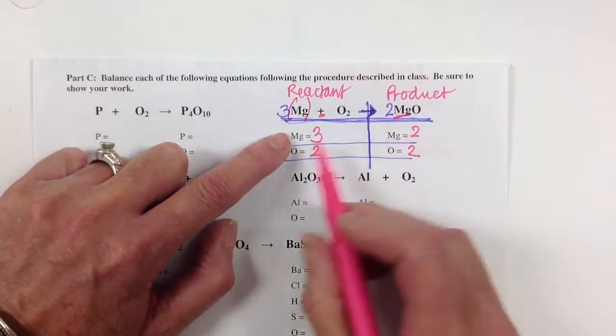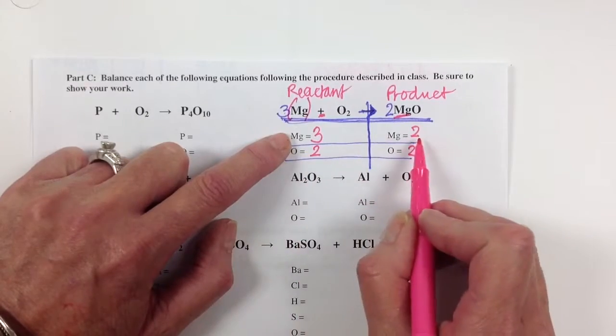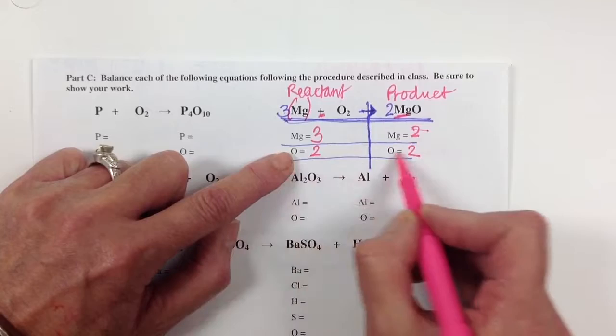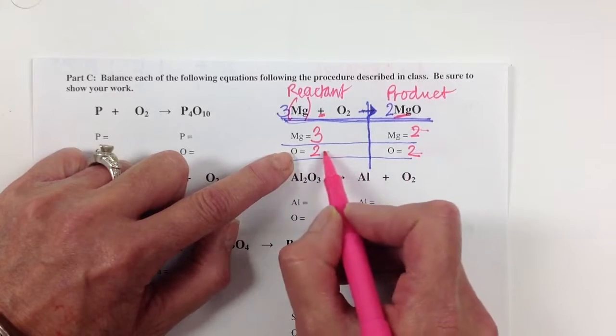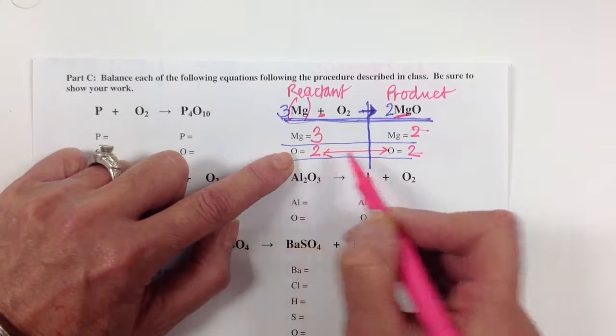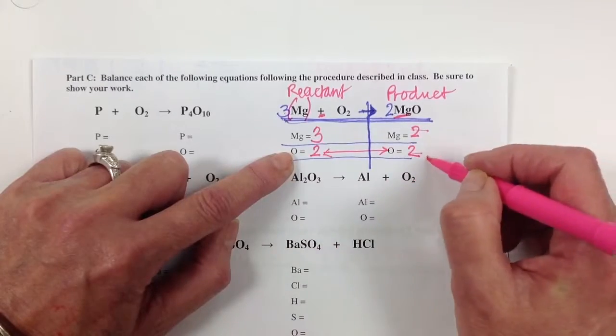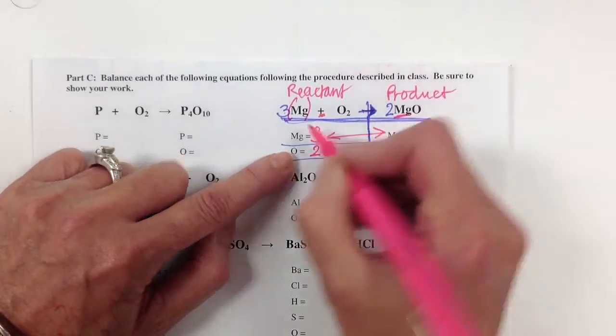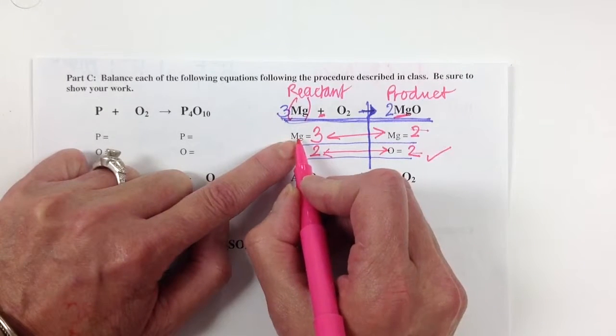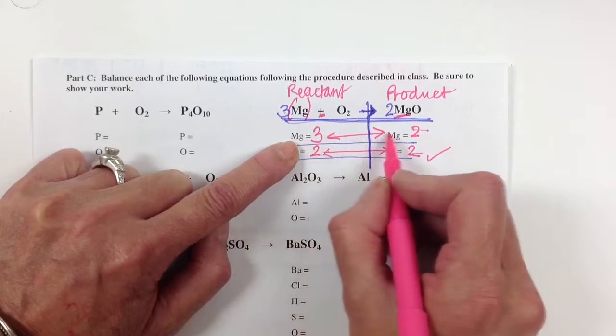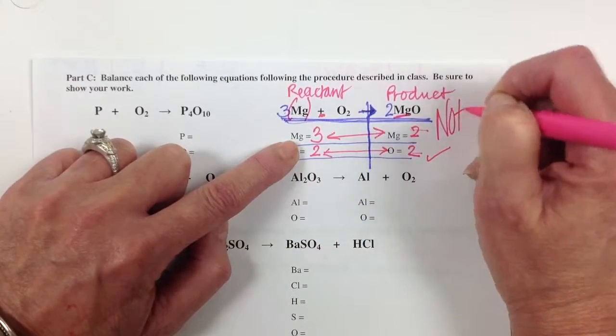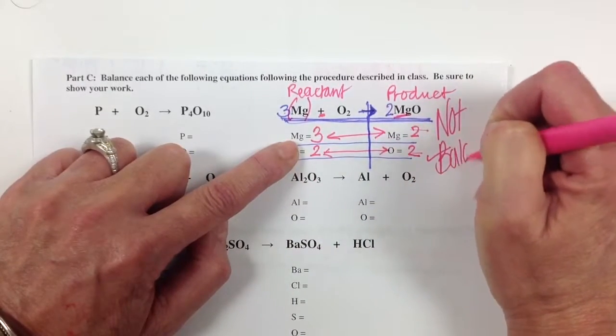Now with them listing the elements for me on either side of the equation in order, I can quickly look across the whole equation to see are these numbers equal. They have to be equal on all counts. They're equal here, but here they are not equal. Meaning that at this point, once I find that one element is not the same on either side of the equation, then it is not balanced.